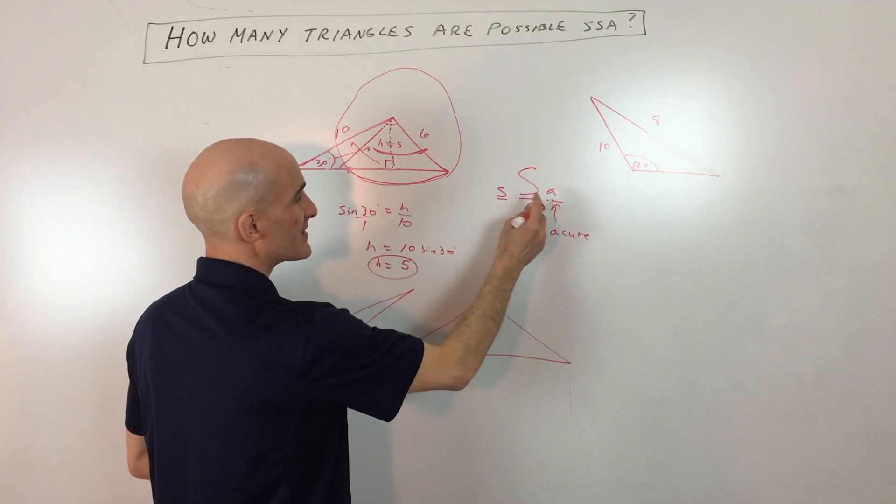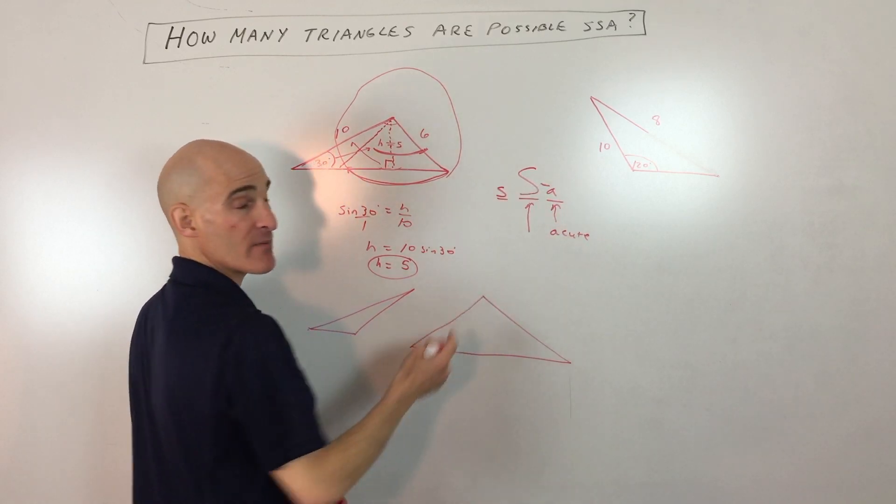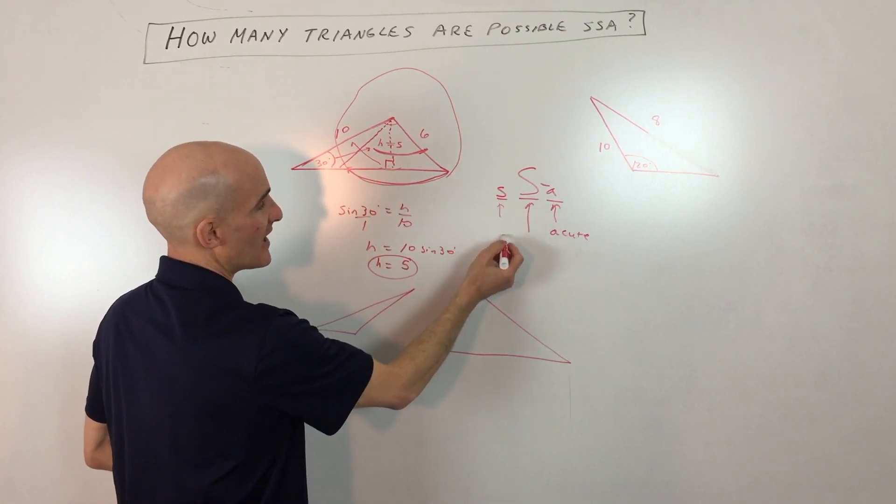Then I have the side that's adjacent, next to the angle. That is longer—that's why I made it a capital letter—than the side across, which is why I made this a lowercase 's'.